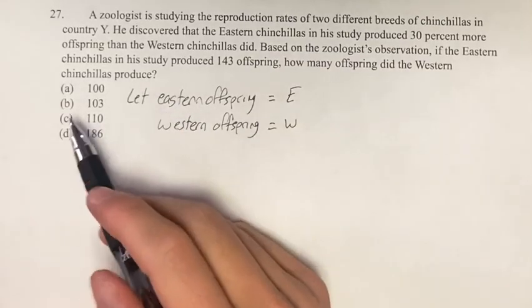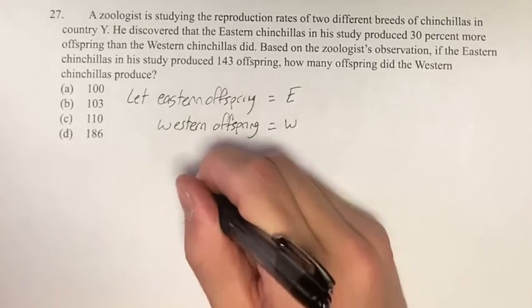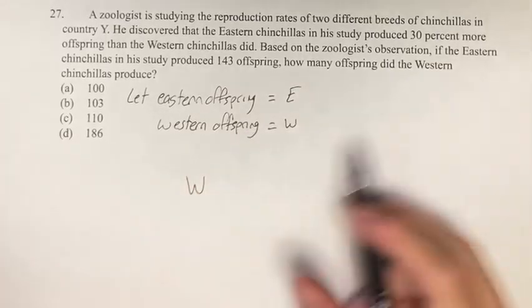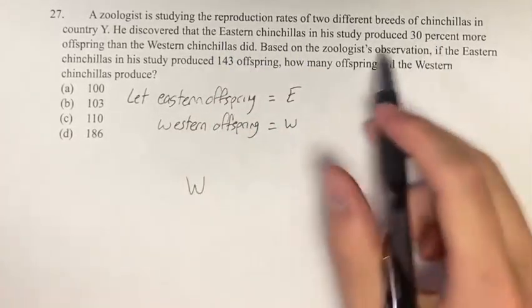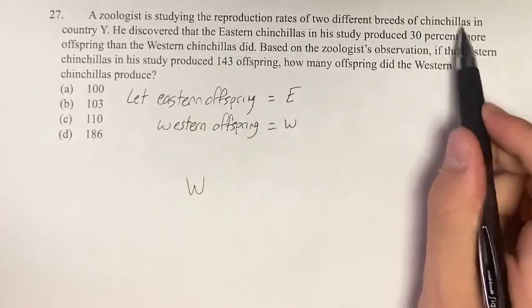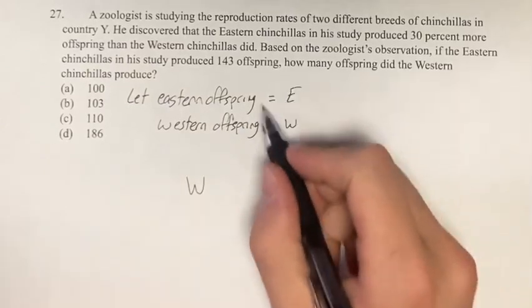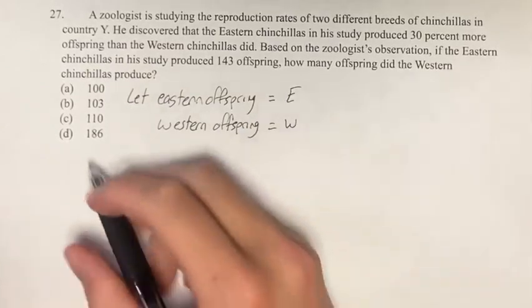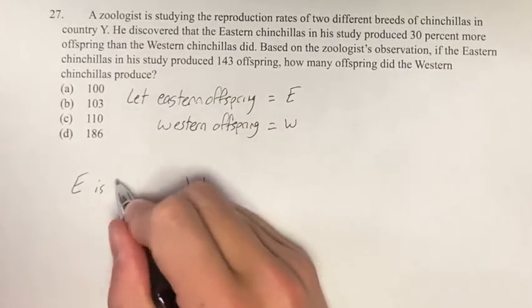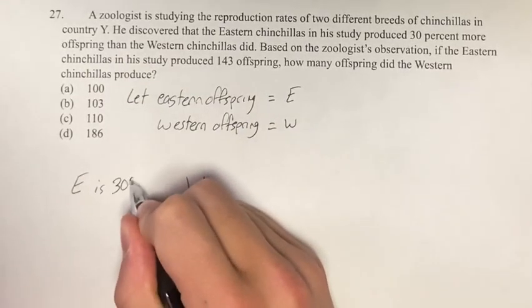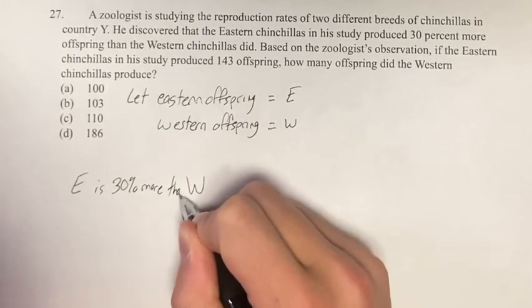So we have some value W, and we're told that the eastern chinchillas produced 30% more than the western. So E is 30% more than W.